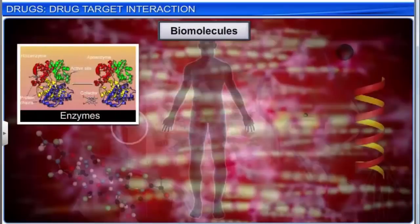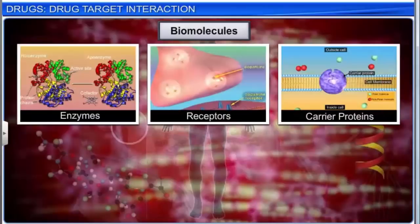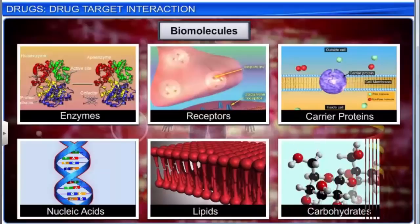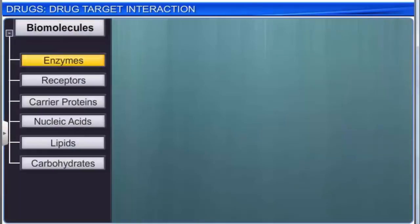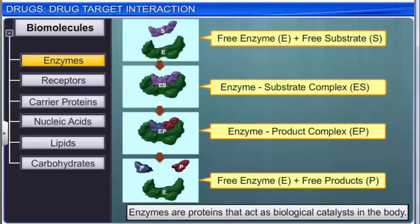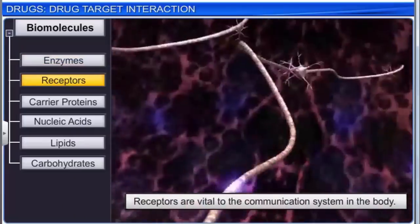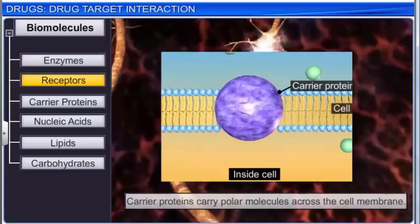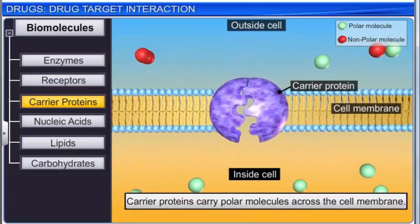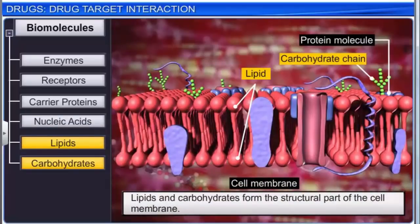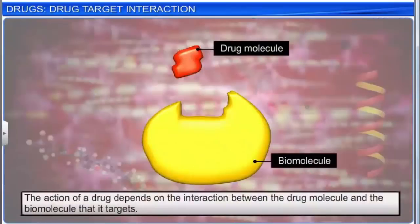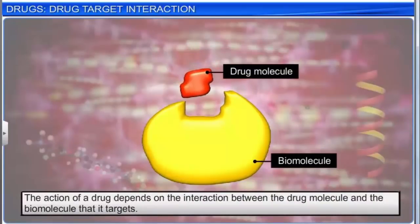Biomolecules such as enzymes, receptors, carrier proteins, nucleic acids, lipids, and carbohydrates perform various functions in the body. Enzymes are proteins that act as biological catalysts. Receptors are vital to the communication system in the body. Carrier proteins carry polar molecules across the cell membrane. Nucleic acids contain coded genetic information for the cell. Lipids and carbohydrates form the structural part of the cell membrane.